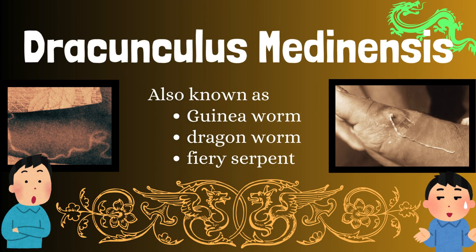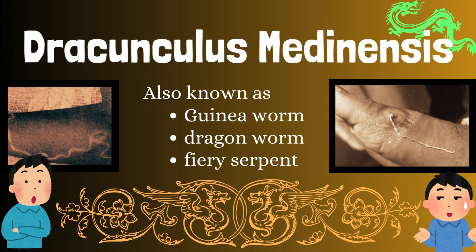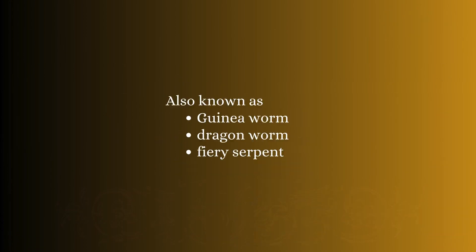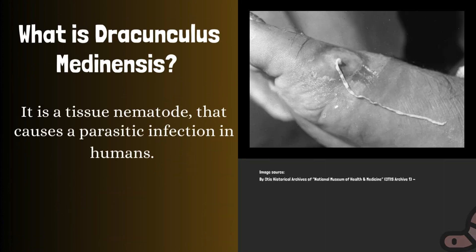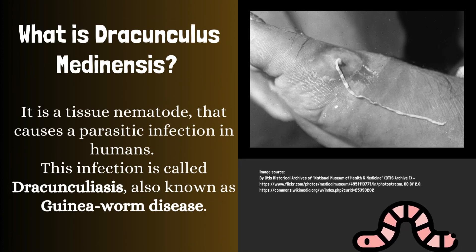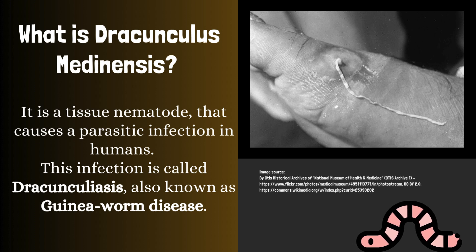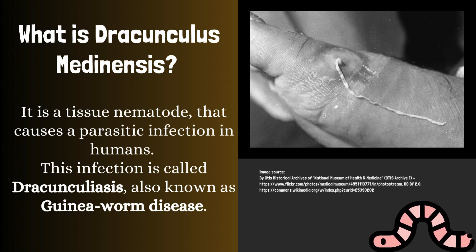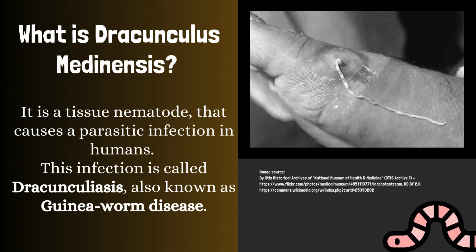Dracunculus medinensis, also known as guinea worm, dragon worm, or fiery serpent. What is Dracunculus medinensis? It is a tissue nematode that causes a parasitic infection in humans. This infection is called Dracunculiasis, also known as guinea worm disease.